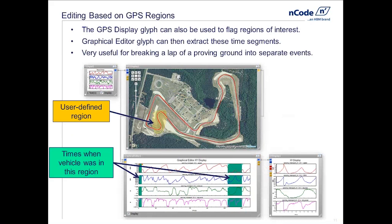We can also do time series editing based on GPS regions. I've chosen to highlight a particular region and told the glyph to show me when the vehicle is in this region — what time periods is my vehicle inside this polygon? I defined this polygon by a series of clicks, creating a yellow highlighted region. The time series data is the same as the input file except certain sections are highlighted, illustrating the time periods in which I was inside that GPS region. The graphical editor glyph extracts only those highlighted time series sections.